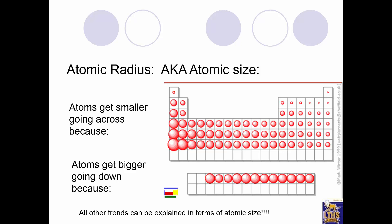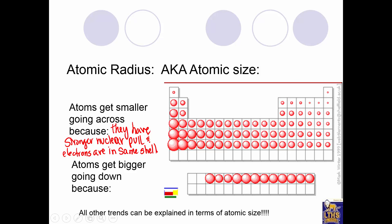If you look at this picture, you can see it represents the size of atoms. You'll notice they get smaller going across the periodic table and bigger going down the table. Atoms get smaller going across because they have a stronger nuclear pull — the nucleus is getting one more proton, and those electrons are in the same shell, so the stronger nucleus pulls them in closer.